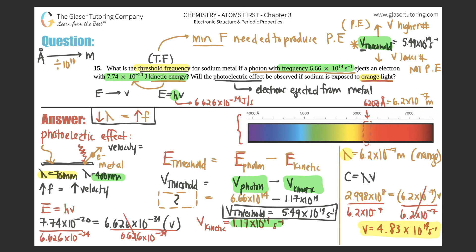Now we compare: if this frequency is lower than the threshold frequency, there's no photoelectric effect; if higher, electrons will be ejected. Our threshold was 5.49 times 10 to the 14th, and the orange light frequency is 4.83 times 10 to the 14th. Since 4.83 is less than 5.49, the orange light frequency is below the threshold — no photoelectric effect. The answer is no; no electrons will be ejected.